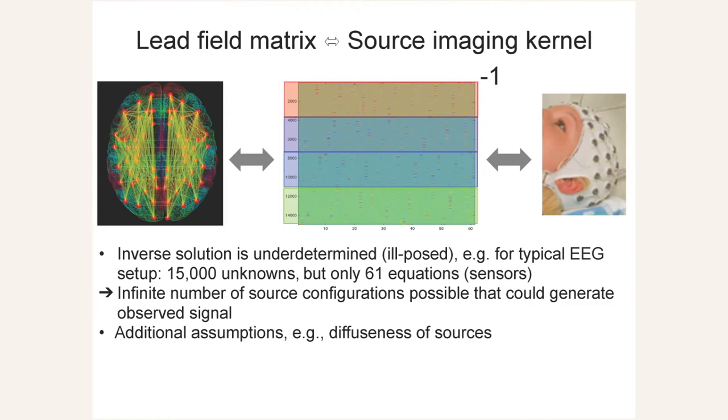You can also generate a batch file out of Brainstorm with the code generation tool to end up with your source imaging batch.